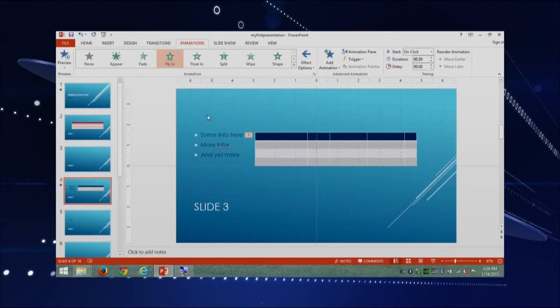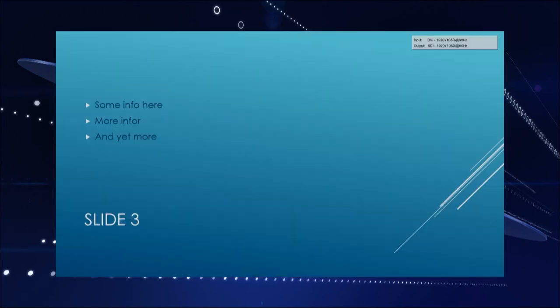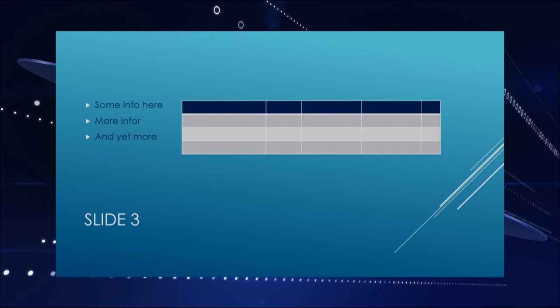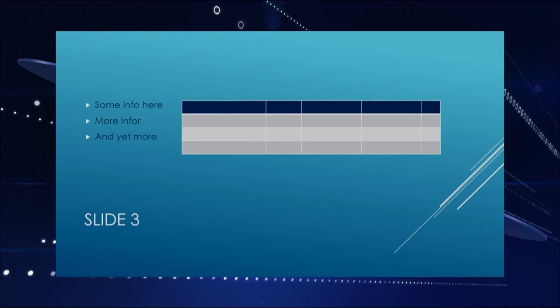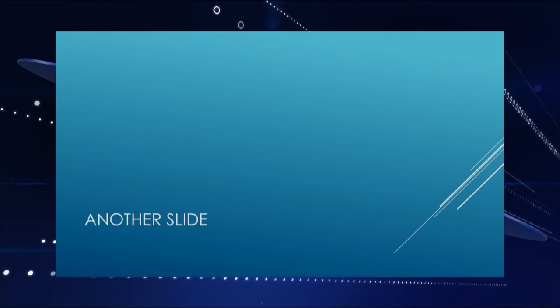So with this, if we run our presentation — allow me to run it so you can see it — I'm going to go into the show and start. Here is my slide three, and when I click, there you go. I clicked and I got my information. Then I click again and I get to slide four. I click again and I go to slide five, and so on. And remember, if you want to go back, click your arrow back. If you want to go forward, click your arrow forward. This is the last slide.